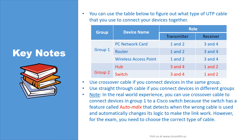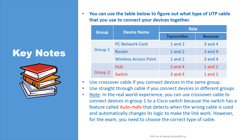Let's sum up our lesson with the key notes. You can use the table below to figure out what type of UTP cable to use when connecting your devices together. You must use crossover cable if you connect devices in the same group, and straight-through cable if you connect devices in different groups. In real-world experience, you can use crossover cable to connect group 1 devices to a Cisco switch, because the switch has a feature called AutoMDX that detects when the wrong cable is used and automatically changes its logic to make the link work. However, for exams, you need to choose the correct type of cable.